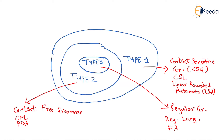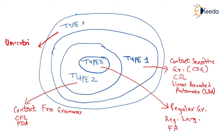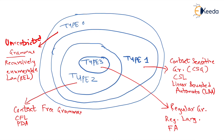The last one is Type 0 grammar. Type 0 grammar is the most rough and tough of all. It is designed using the most powerful machine we studied, called the Turing machine. Type 0 grammar is called unrestricted grammar. The language of this grammar is called recursively enumerable language, also called REL, and the machine used for this is called Turing machine.